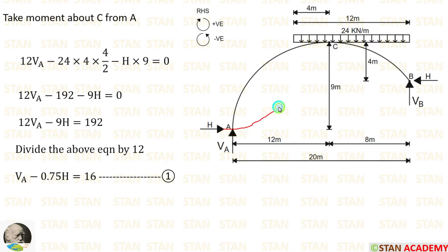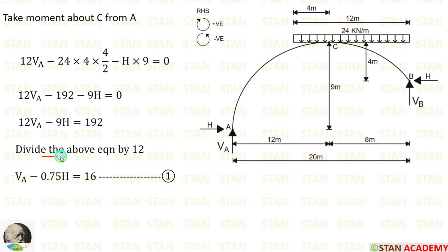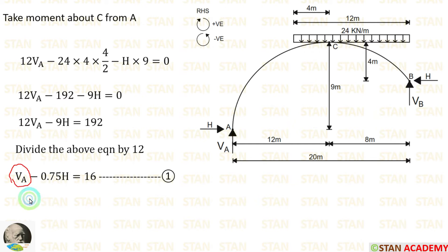The horizontal thrust is acting towards point C in the anticlockwise direction, so it will be negative. For the horizontal thrust, we take the height of 9 meter: minus H × 9. In this way, we can make one equation. Let us divide the equation by 12 because we want to keep Va alone. Now there is no coefficient with Va, so it will be very easy for us when we solve the two equations.